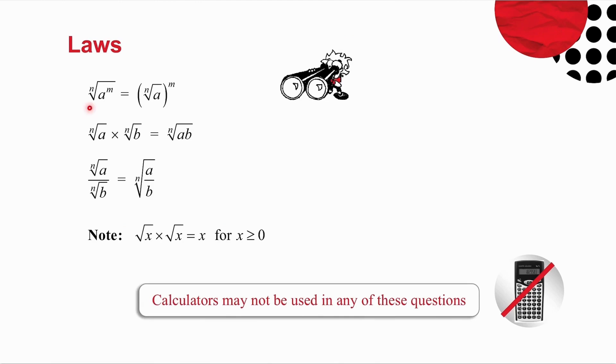Let us start off by having a look at some laws. The first law says that the nth root of a to the m is equal to the nth root of a to the m. In other words, if I raise something to a power first and then take the root, it's exactly the same as if I take the root first and then raise it to the power.